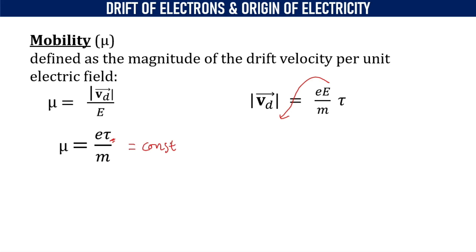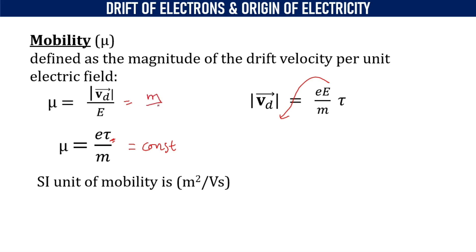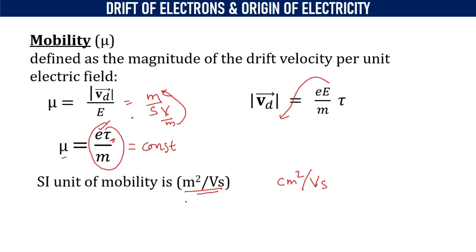The SI unit for measuring mobility is meter squared per volt-second. The numerator is velocity measured in meters per second, and the denominator is electric field measured in volts per meter, giving meter squared per volt-second. The practically acceptable unit is centimeter squared per volt-second. Mobility of a given conductor is always positive. I hope you have understood the concept.